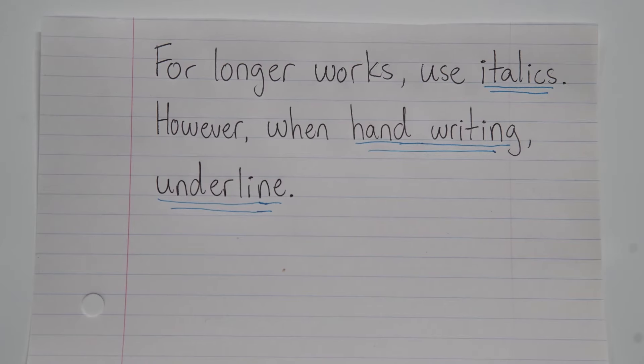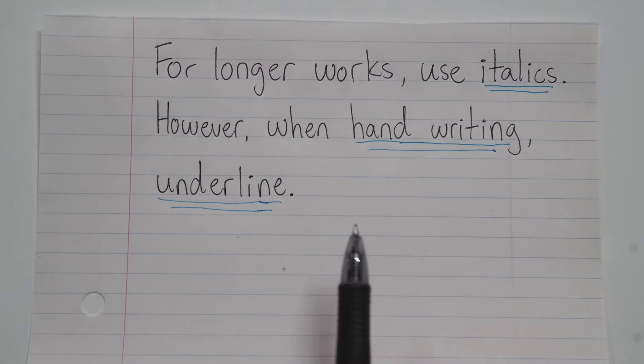So when it comes to titles, here are the rules. For most longer works, you will use italics. However, when you are writing these titles by hand, you want to underline them, and that's because it's pretty awkward to try to italicize your handwriting. So once again, if you're typing a longer title, italicize it. If you're handwriting a longer title, underline it.